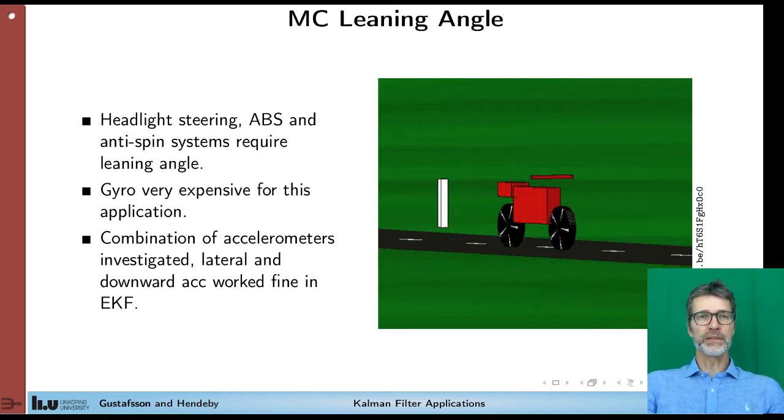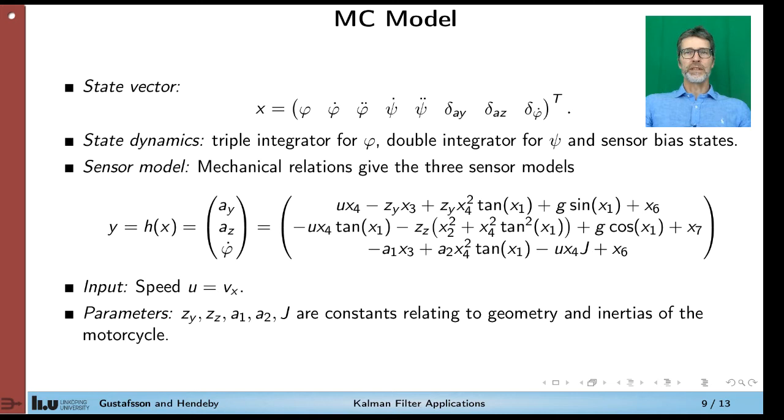So when we did this study, it was a master thesis student who did it, the gyroscopes were quite expensive compared to accelerometers. So the hypothesis is that you can get sufficient accuracy of the leaning angle by combining accelerometers and gyroscopes. The first thing you have to think of in such an application is what state vector do you need? We are interested in the leaning angle, so phi is the leaning angle, the yaw angle must be there. We probably need at least one derivative. It turns out that also the second derivative is nice to have there. You also need the yaw rate and its derivative, and as usually we need the bias states for the sensors.